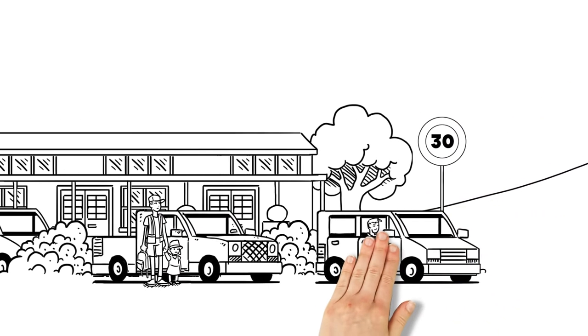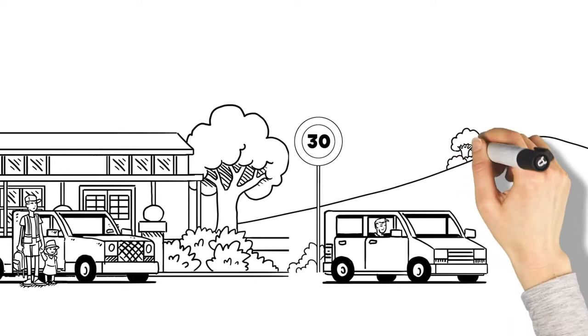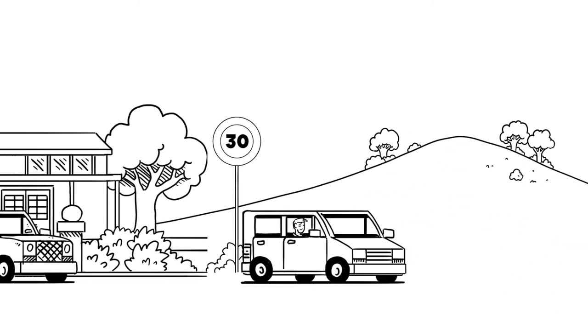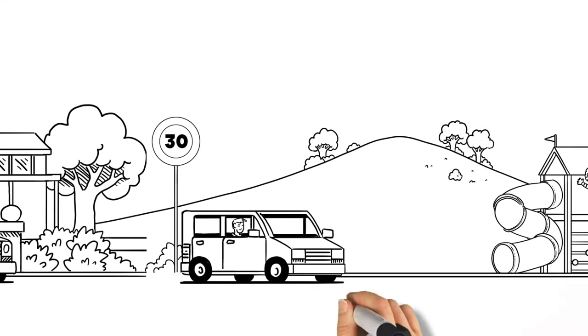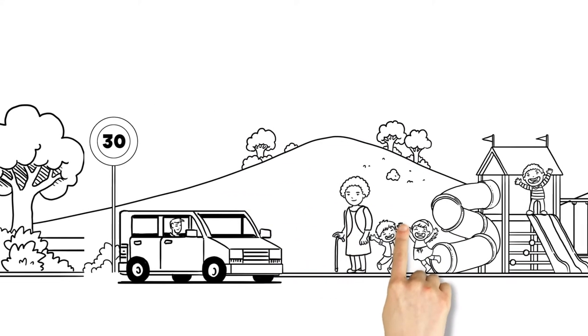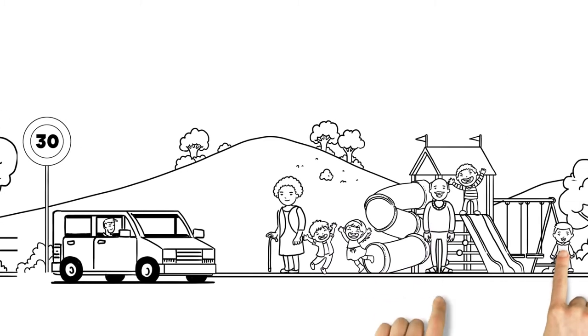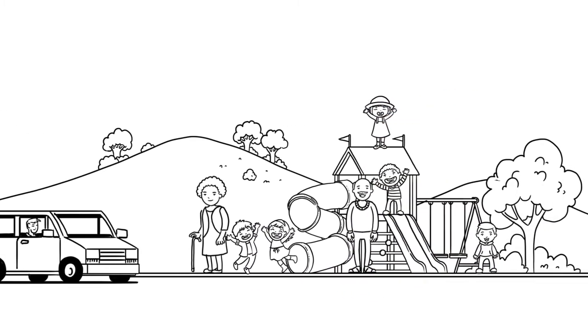Reducing speeds to 30 kilometres an hour in built up areas like towns and city centres or around schools can lower traffic noise by up to 40%. Living in a quiet area is great for overall health and well-being, especially for children and older people.